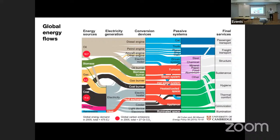As we track these flows of energy through the engineering devices we use, you can see about a third of our energy goes to electricity, two-thirds otherwise. We've got these conversion devices — the engines, burners, heaters, coolers, light bulbs that convert energy from fuel into useful energy: motion in blue, heat in red, and some light and electronics at the bottom. About half the value of electricity is used to provide heat, maybe 40% used to move things around.